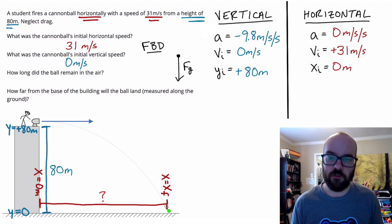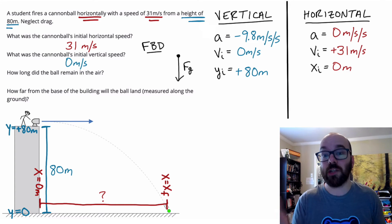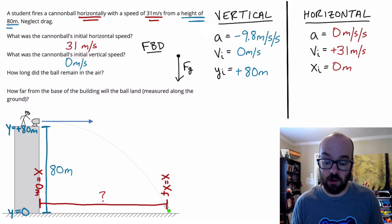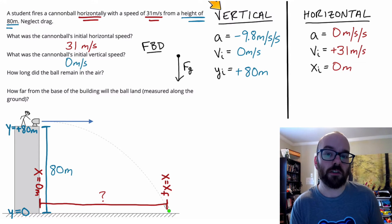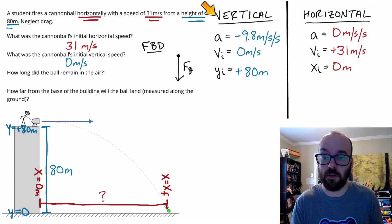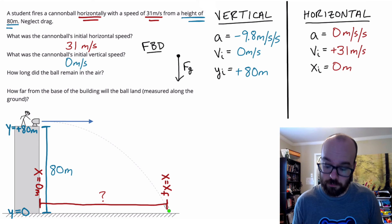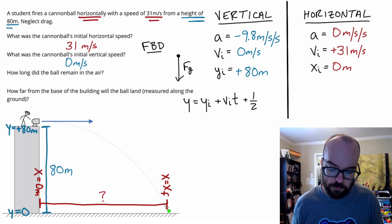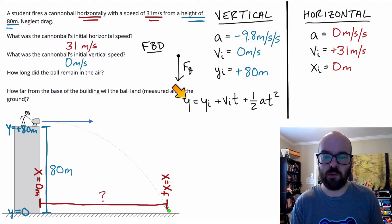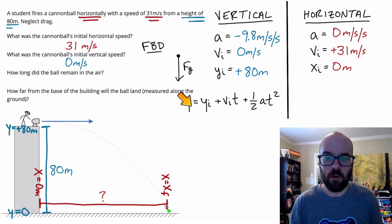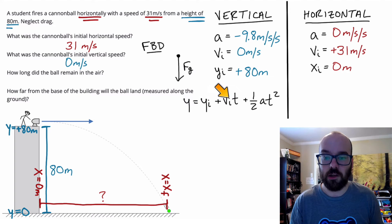What we want to do now is solve for the time. As soon as you have enough info, solving for the flight time — the amount of time the projectile is in the air — is the best way to go. More often than not, we'll use the vertical to find flight time. We're going to write out the position equation: vertical position equals initial vertical position plus initial velocity times time plus one-half a times t squared.